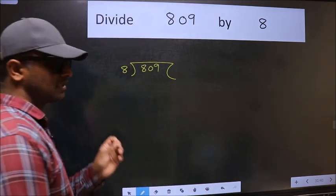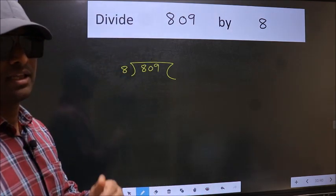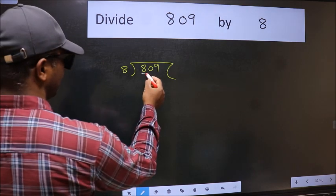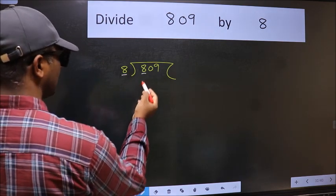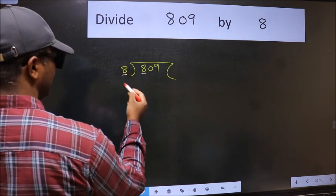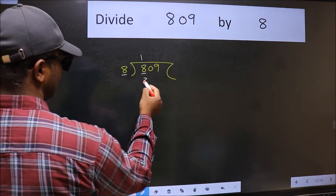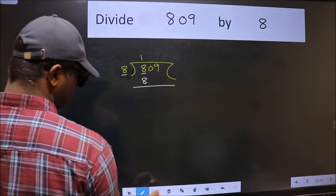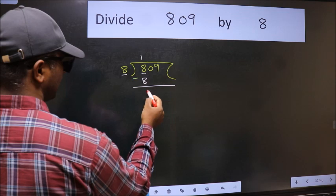809 and 8 here. This is your step 1. Next, here we have 8 and 8 here. When do we get 8 in 8 table? 8 once 8. Now we should subtract. We get 0.